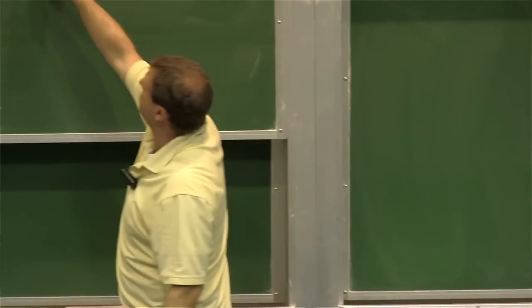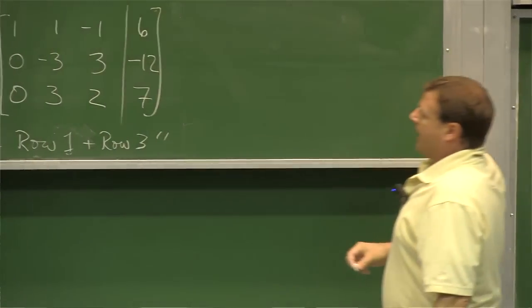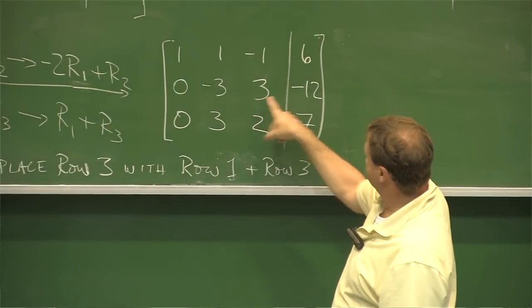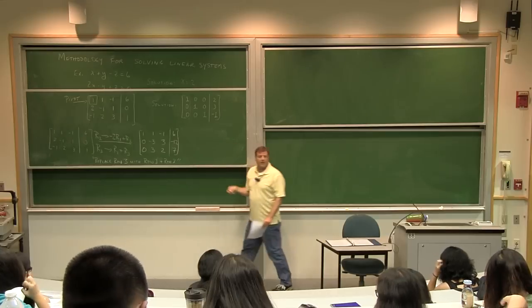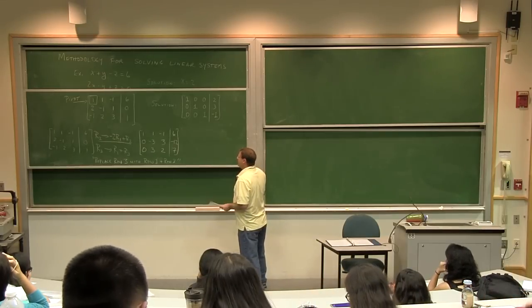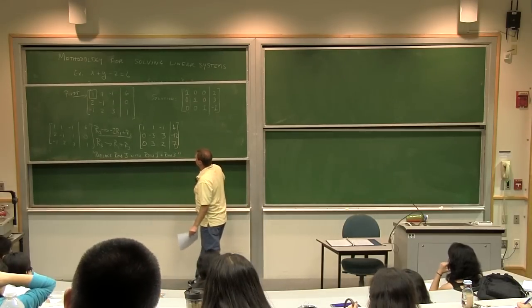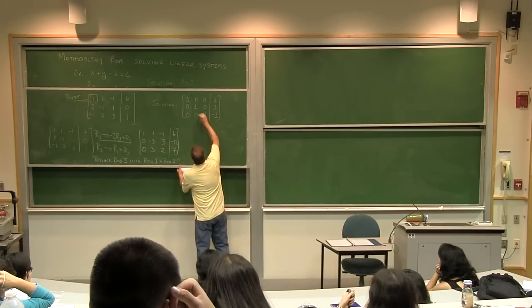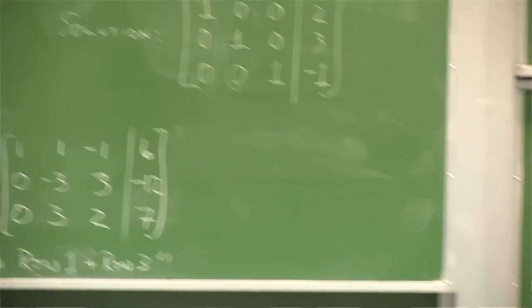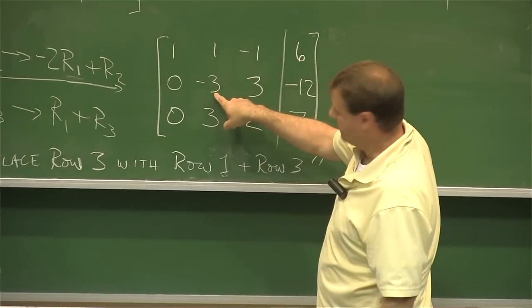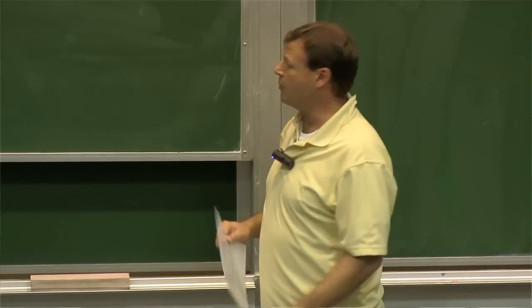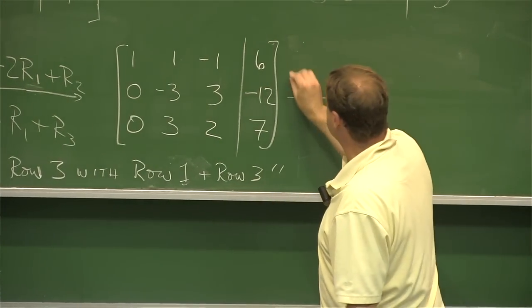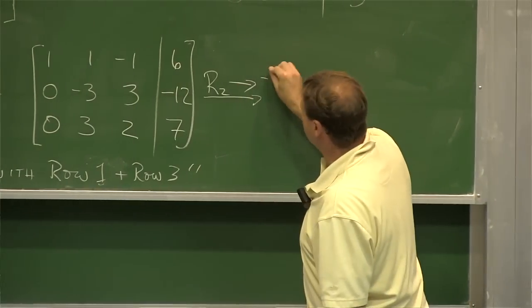Now I've made progress — this is now two variables. If I wrote this back in terms of x and y, it's negative 3y plus 3z equals negative 12, and 3y plus 2z equals 7. But we want to practice the matrix method. Next, I'd like to make this a 1 — I'll multiply by negative one-third. So I replace row 2 with negative one-third times row 2.